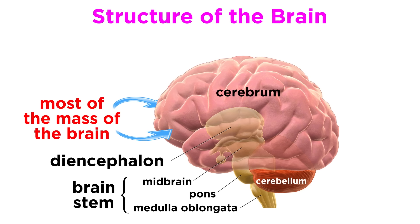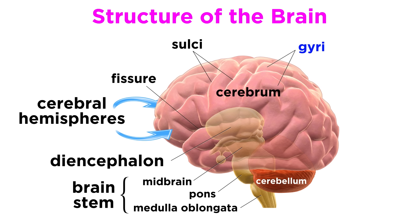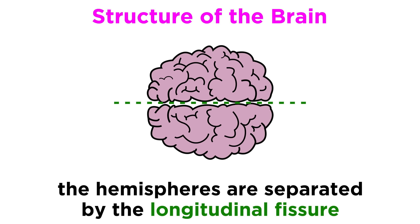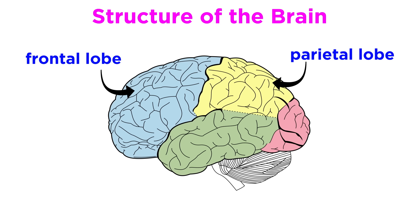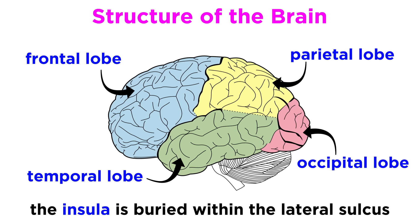The majority of the mass of the brain sits in the cerebral hemispheres. The spongy appearance is produced by ridges called gyri, separated by grooves called sulci, while deeper grooves are called fissures, like the longitudinal fissure that separates the hemispheres. Each hemisphere is divided into five lobes: frontal, parietal, temporal, occipital, and insula — the first four of which are named after the cranial bones adjacent to them.